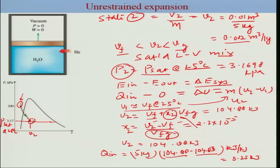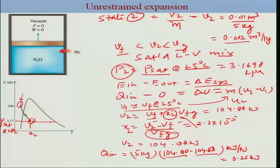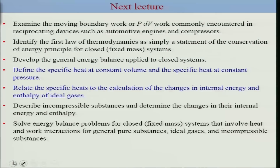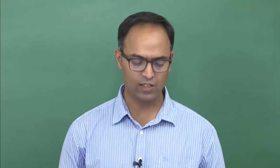That is how we solve problems using tables for first-law analysis. Note that Q-in is positive, confirming we must provide energy to the system in the form of heat for this unrestrained expansion so that the temperature at the final state is fixed at 25°C. In the next lecture, we are going to define specific heat at constant volume and other ways of using specific heat to calculate changes in internal energy and enthalpy.